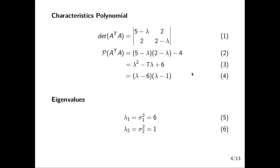We obtain the characteristic polynomial from the matrix, and when we equate it to zero we get our eigenvalues, which are lambda equal to five and lambda equal to six.